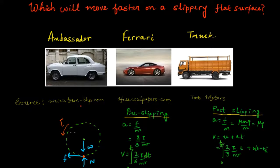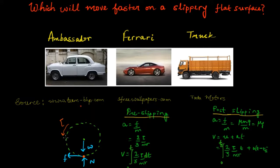When you press the accelerator, there is a torque from the engine which makes the wheel rotate. As the wheel rotates, there is a force of friction which resists the rotation of the wheel — in the opposite direction to the torque's effect. It is this force of friction that makes the vehicle move forward, as we saw in the previous video.